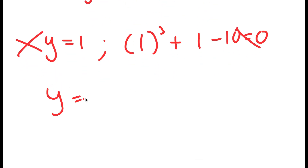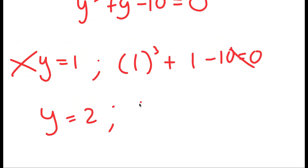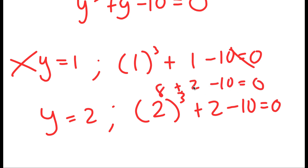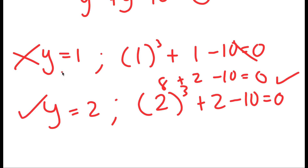Now I'm going to try y equals 2. So when y equals 2, I get 2 to the power of 3 plus 2 minus 10 is equal to 0. Now 2 to the power of 3 is 8, so I have 8 plus 2 minus 10. 8 plus 2 is 10, 10 minus 10 is 0. So this works, meaning y equals 2 is a solution.